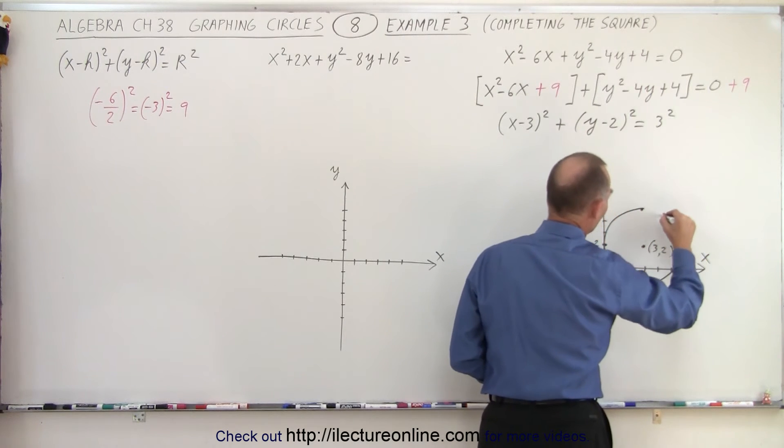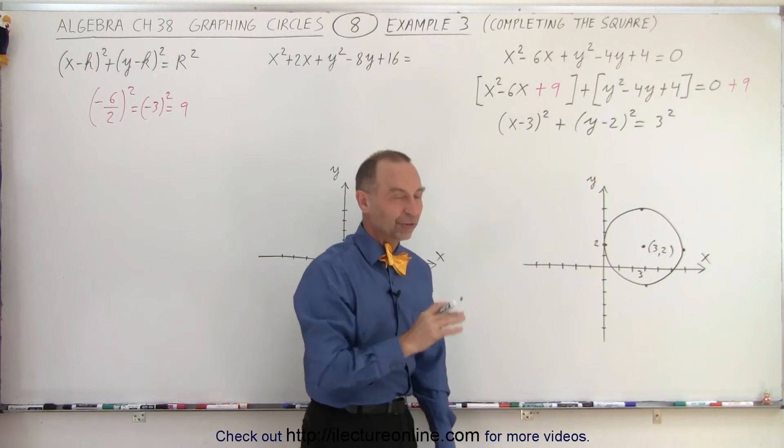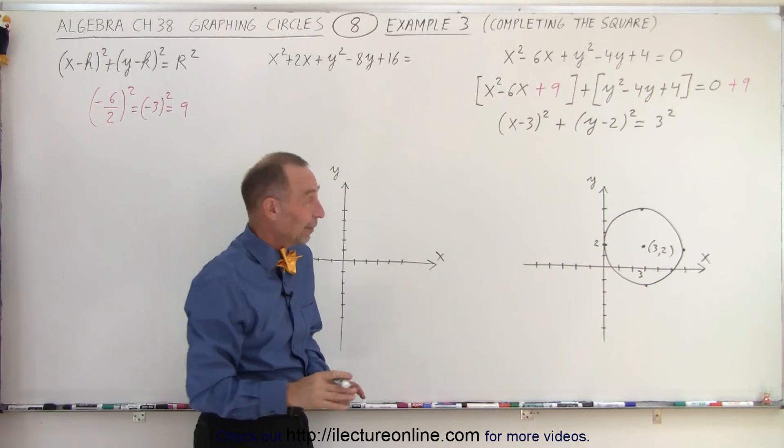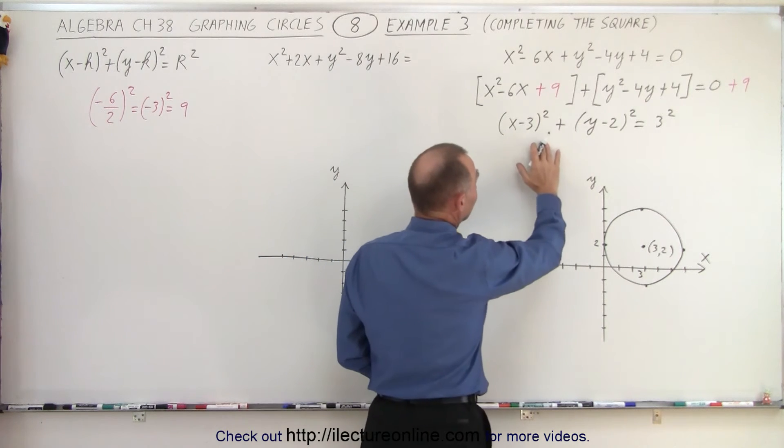we have the graph of the circle. Kind of a circle, anyway. All right. So, that's the graph of that particular equation. And again, to figure out what that is, we have to use a completing of the square method.